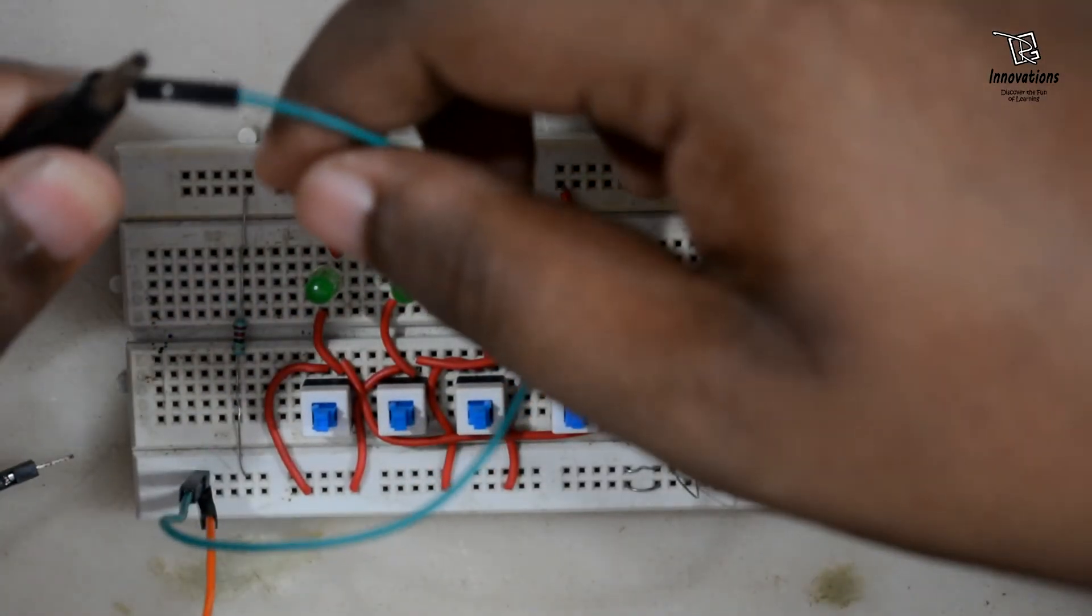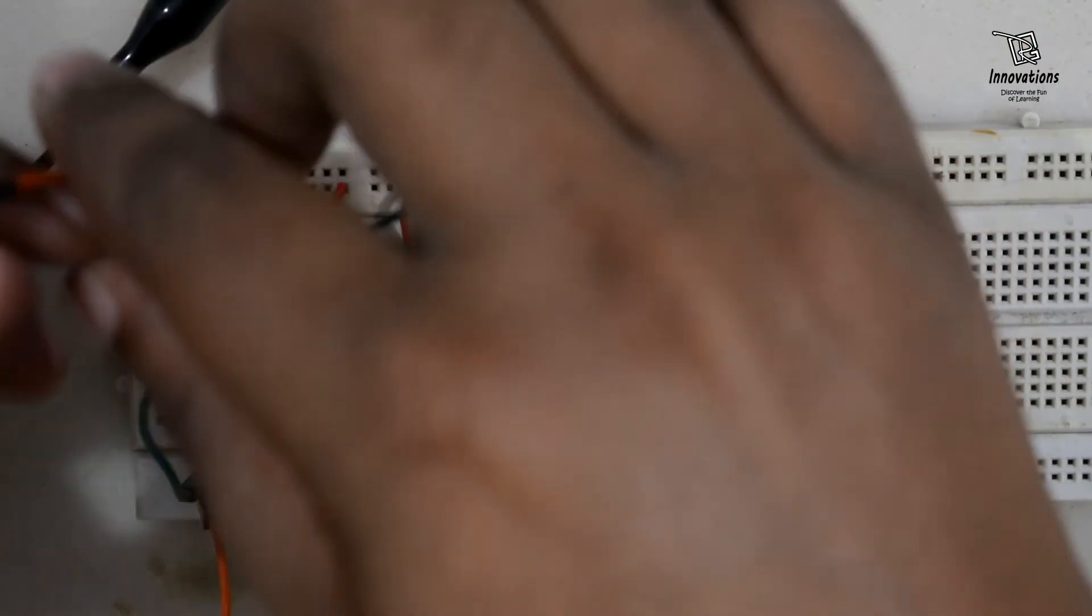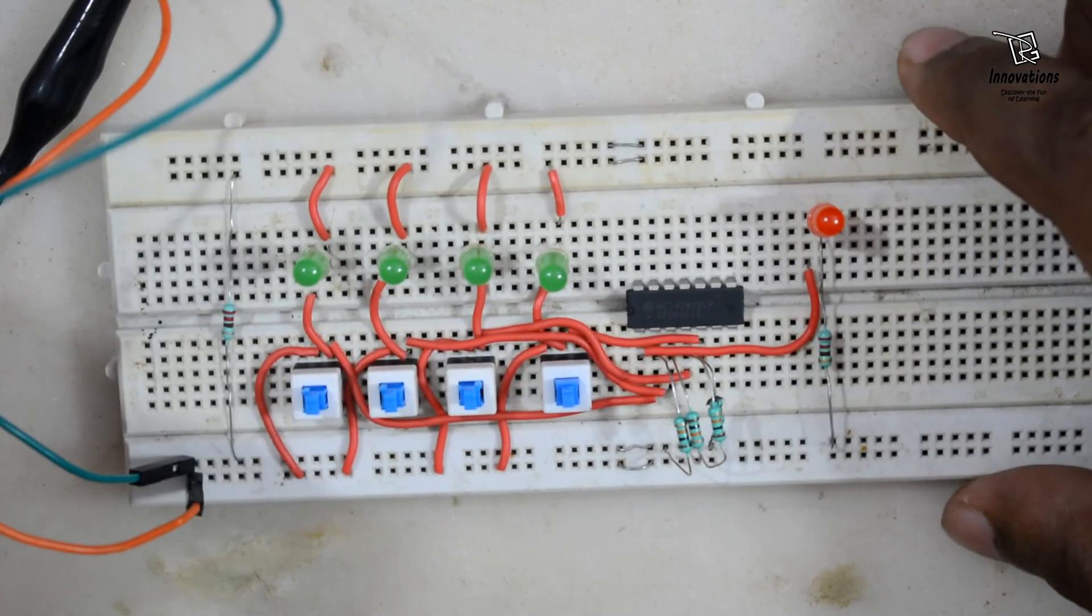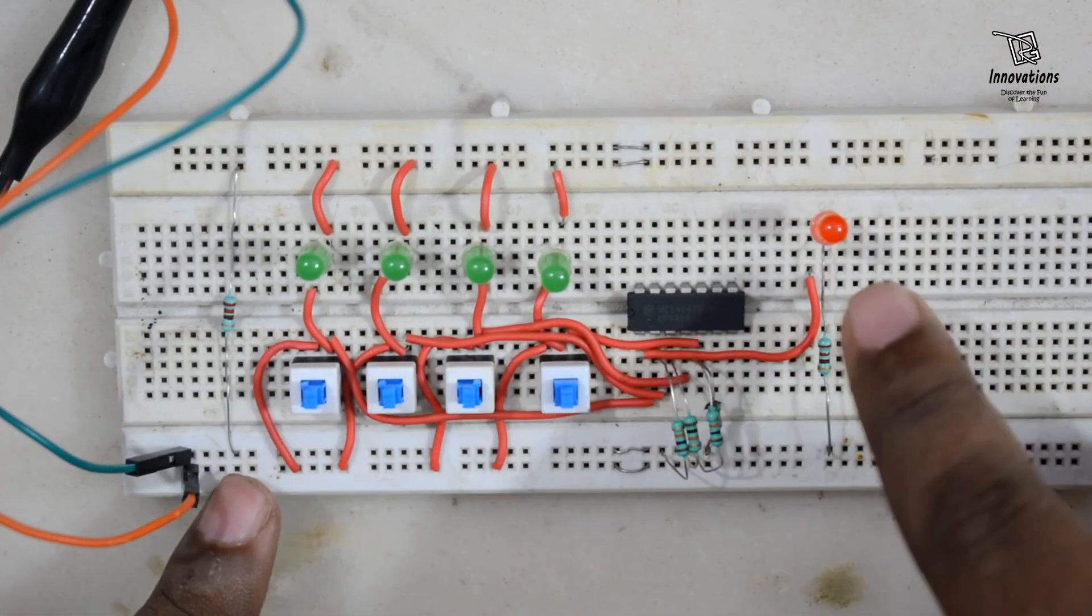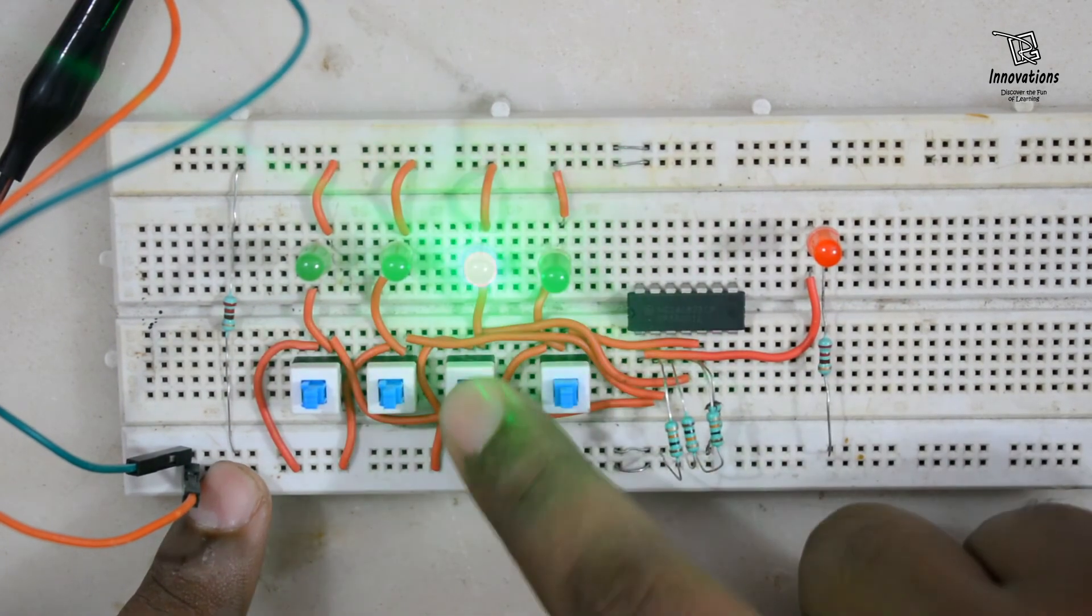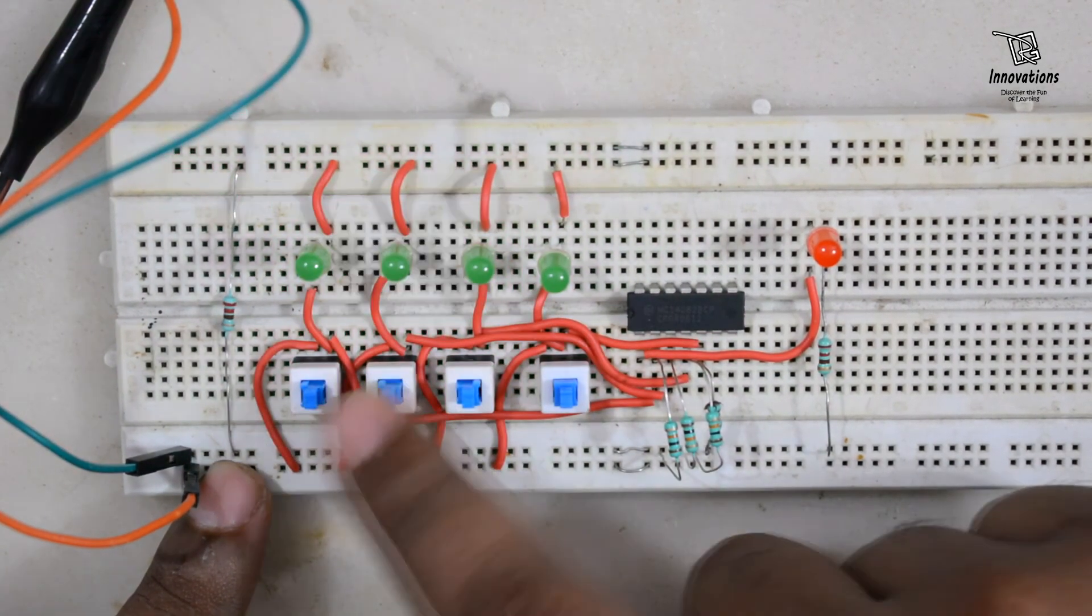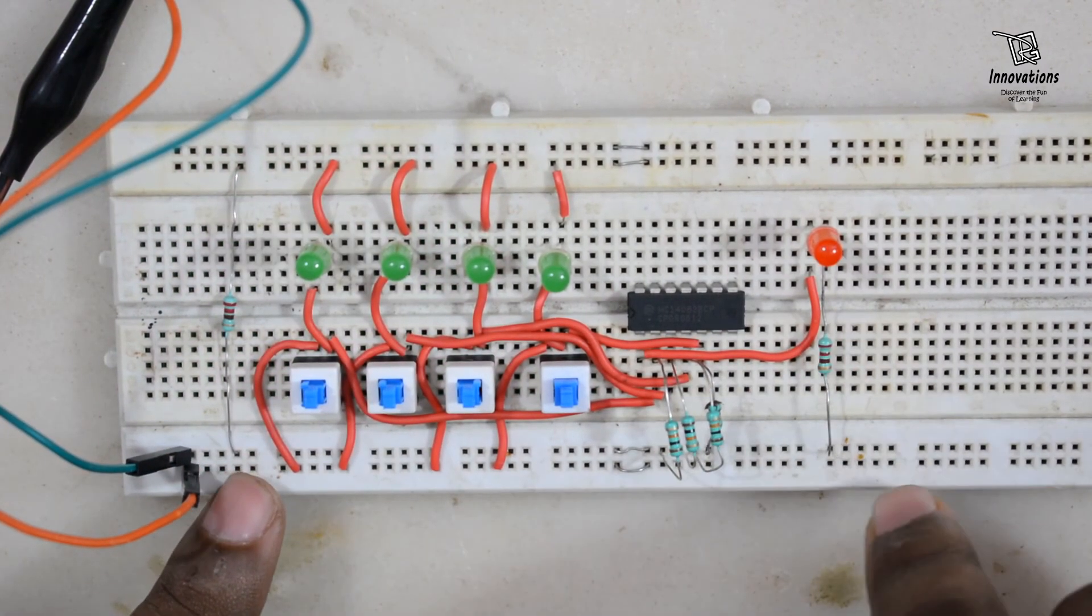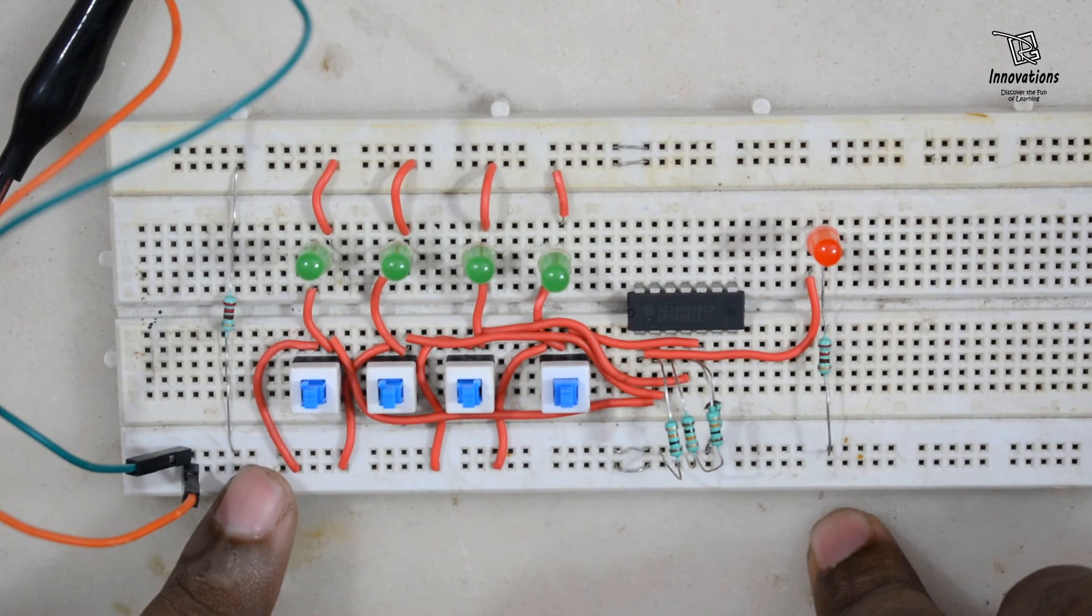We have put in the IC. And now we will connect the power supply to 5 volt DC. So this is the negative, and this is the positive. Power supply given, you can see the output LED is not glowing. If we press any of the input, the input will turn high but the output remains 0. So we will try to match it with the truth table of AND gate, 4 input AND gate.